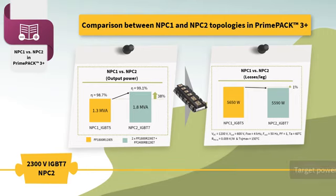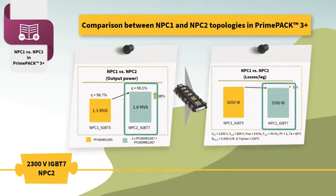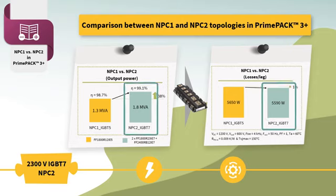So, FF1800R23IE7 and FF2400RB12IE7 are the best choices for the inverter's design when trying to achieve the next level of power density and performance optimization.